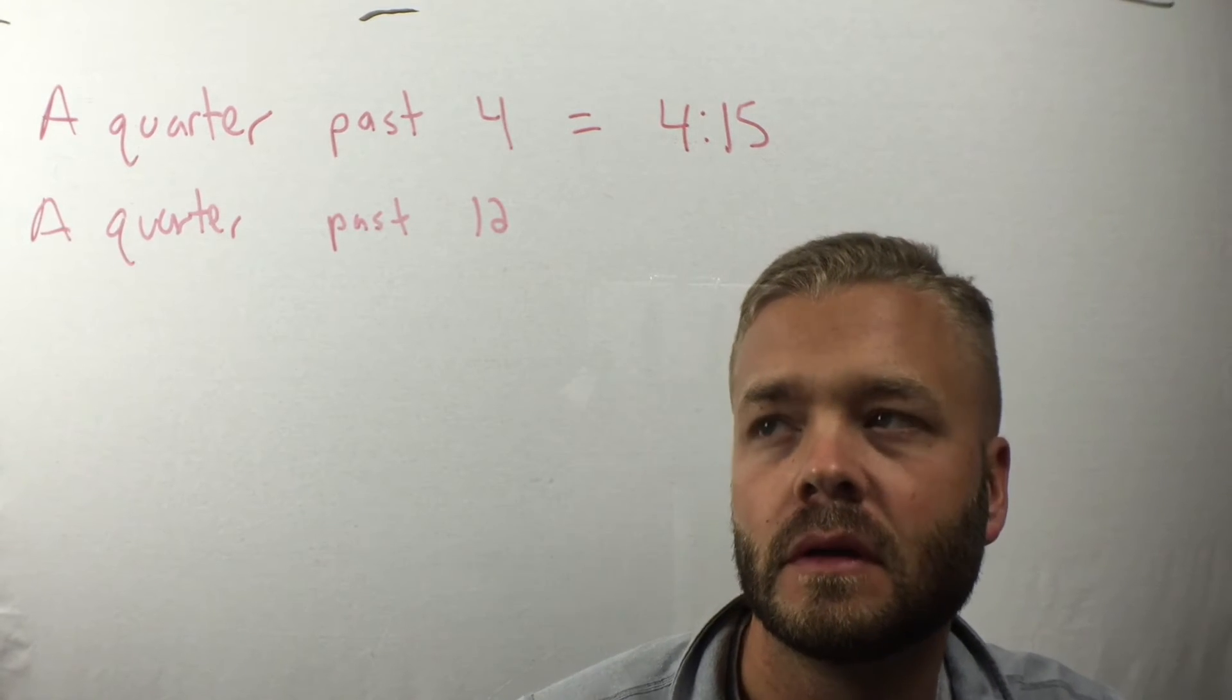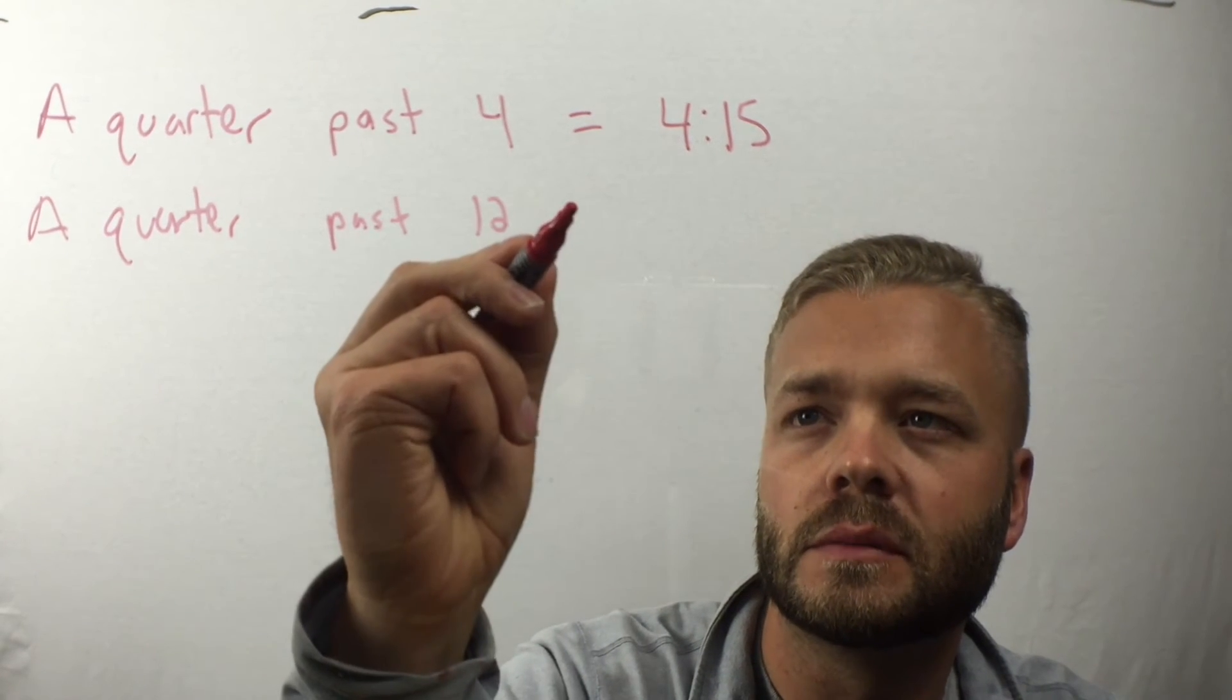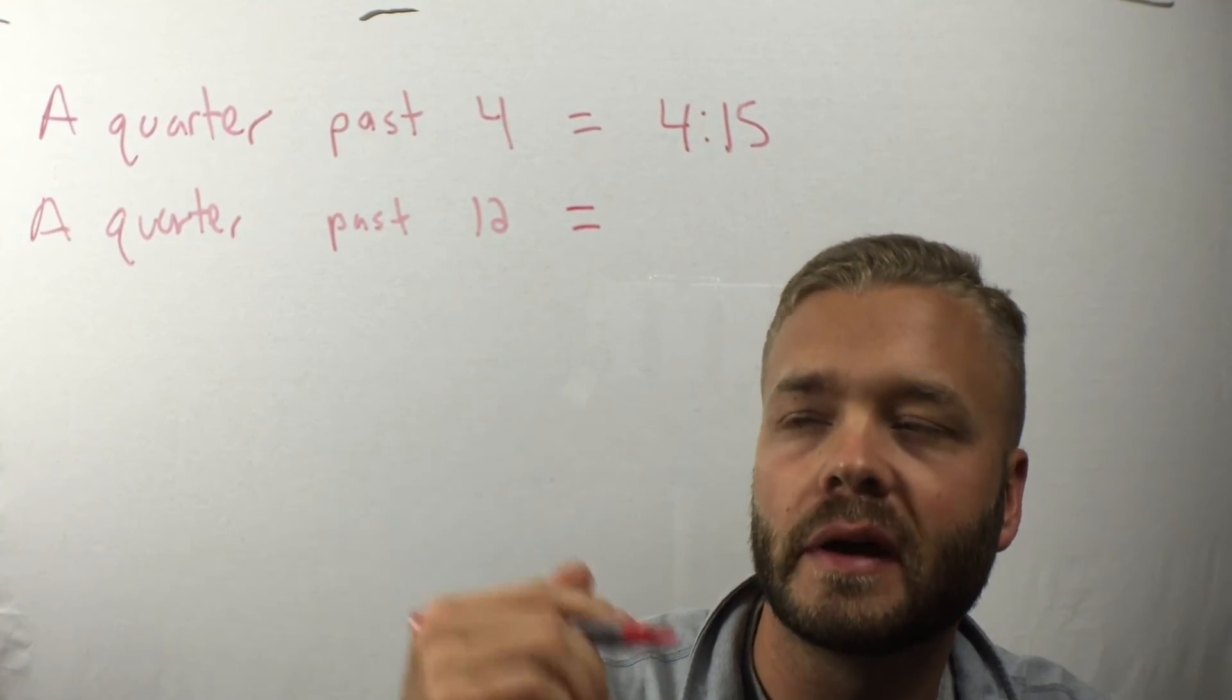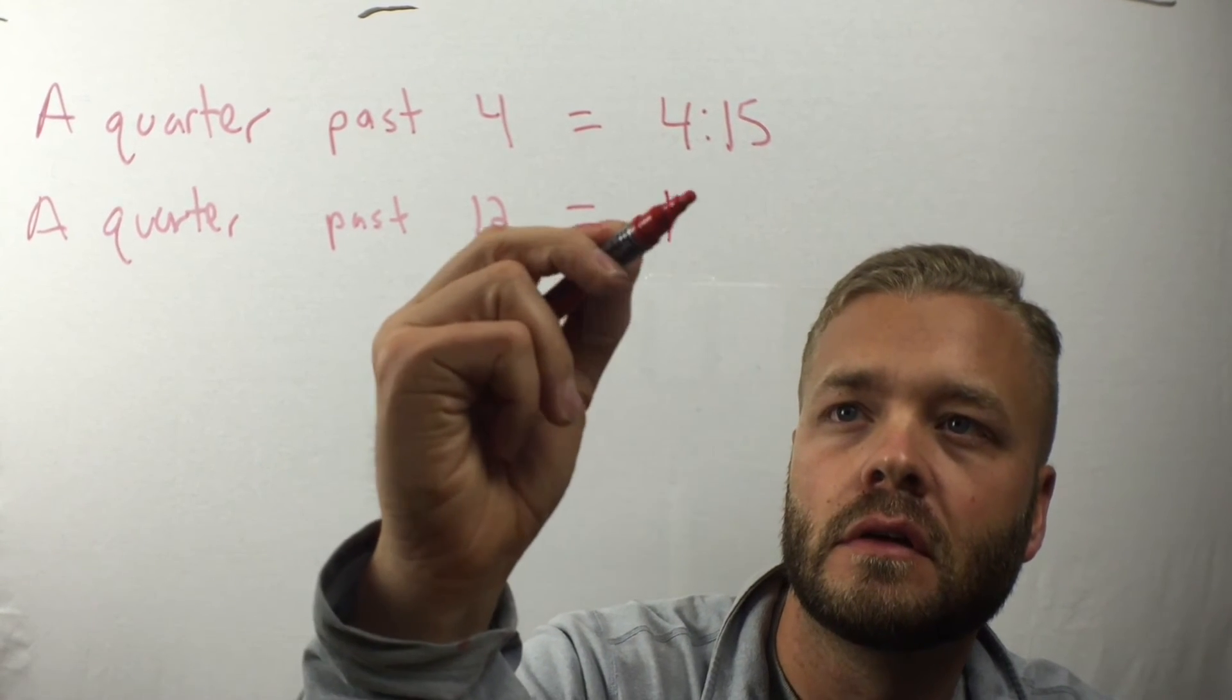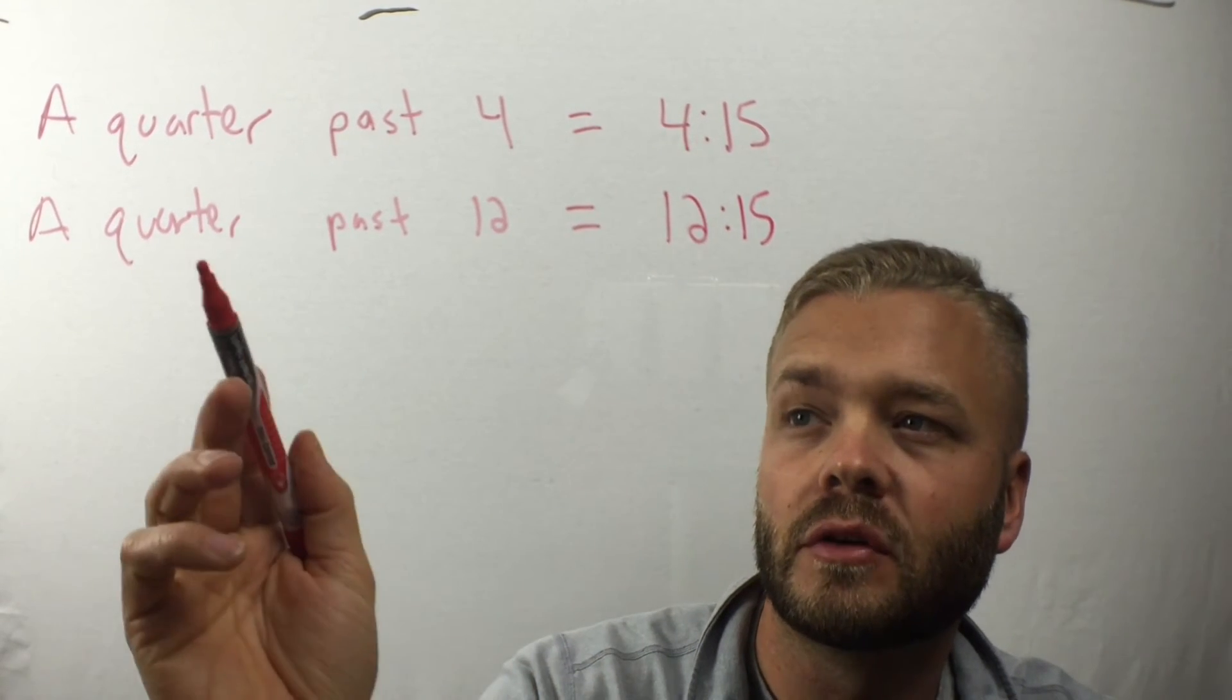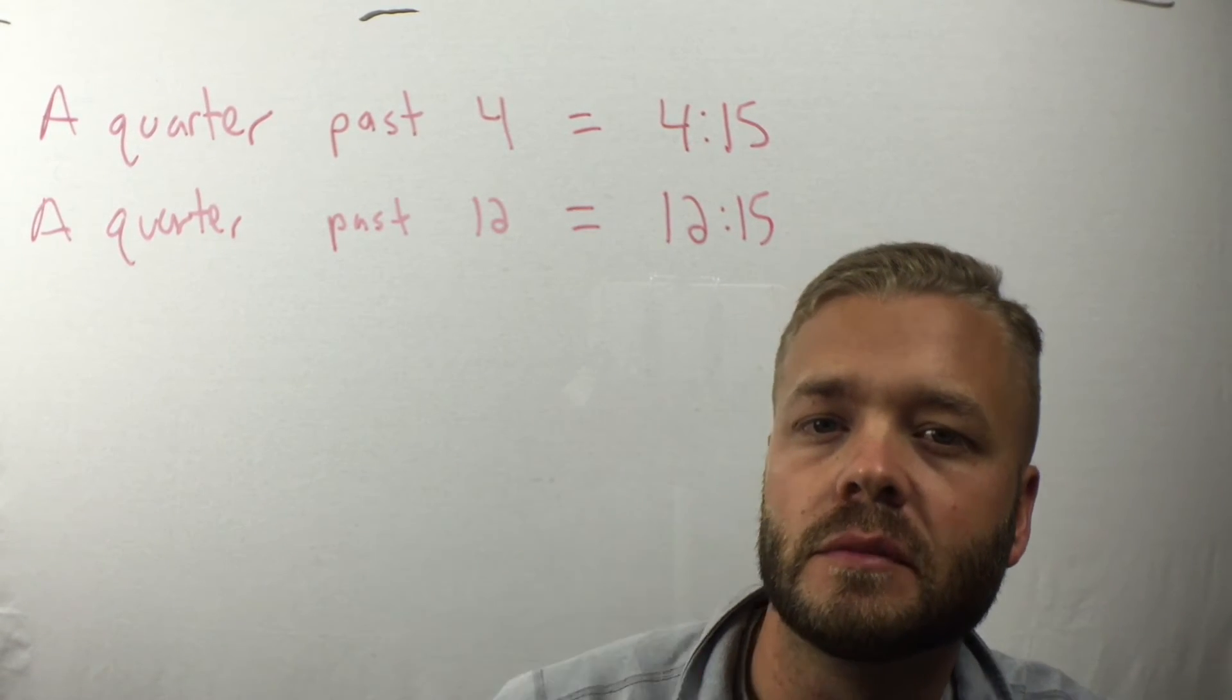Another example, a quarter past 12. If someone tells you we're going to meet up at a quarter past 12, we'll go 15 minutes past 12. Because remember, a quarter of an hour is 15 minutes.